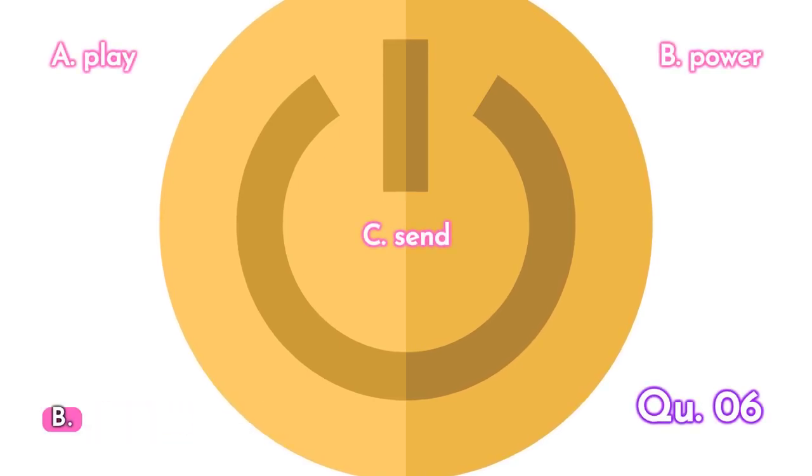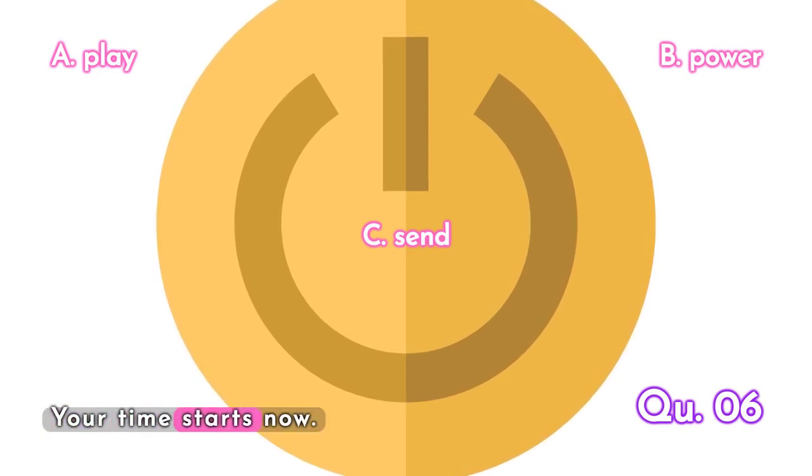Question 6. This one should be easy. What does it represent? A. Play, B. Power, C. Send. Your time starts now!